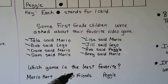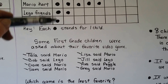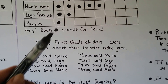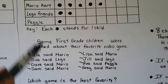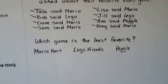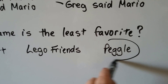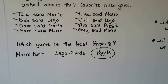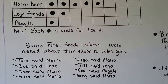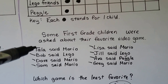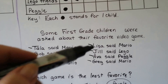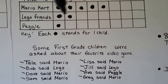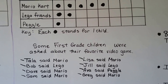Which game is the least favorite? The one with the least number of black dots — that would be Peggle. The least favorite game is Peggle; it has fewer dots. We have one, two, three, four, five, six, seven, eight children and one, two, three, four, five, six, seven, eight answers — so we know we did it right.